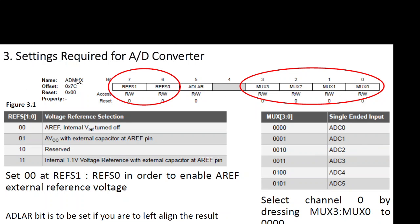The ADMUX register is used to set the channel selection. Channel selection is done by the least significant bits of the register, and the reference voltage source selection is done by the two most significant bits of the ADMUX register. In this example, we are using the AREF pin as the reference voltage, set by writing zeros to both of those bits. I am using channel 5, so the channel bits should be set to 0101.